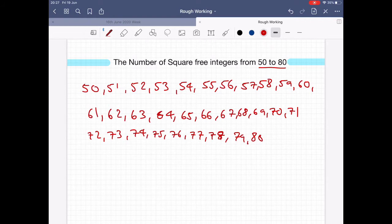I'm just going to write the squares which these might be divisible by. We have 4, 9, 16, 25, 36, 49, and 64, because the next square is above 80.